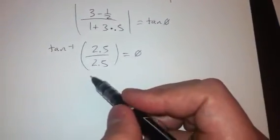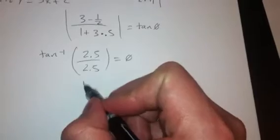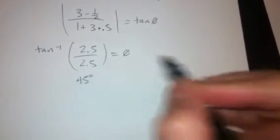And this is actually tan inverse of one, which we know is 45 degrees. So the angle between these two lines is equal to 45 degrees.